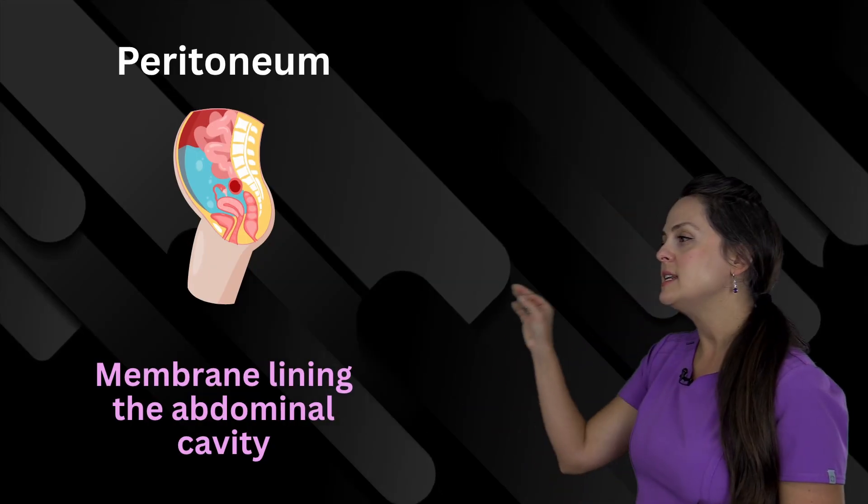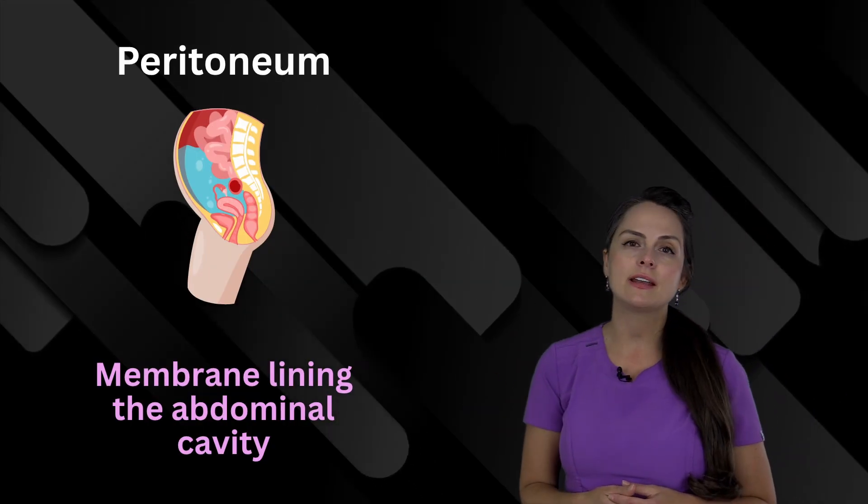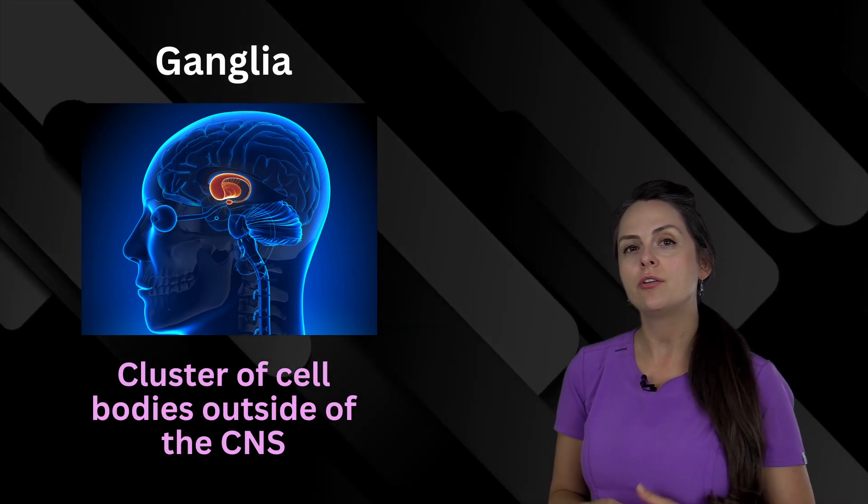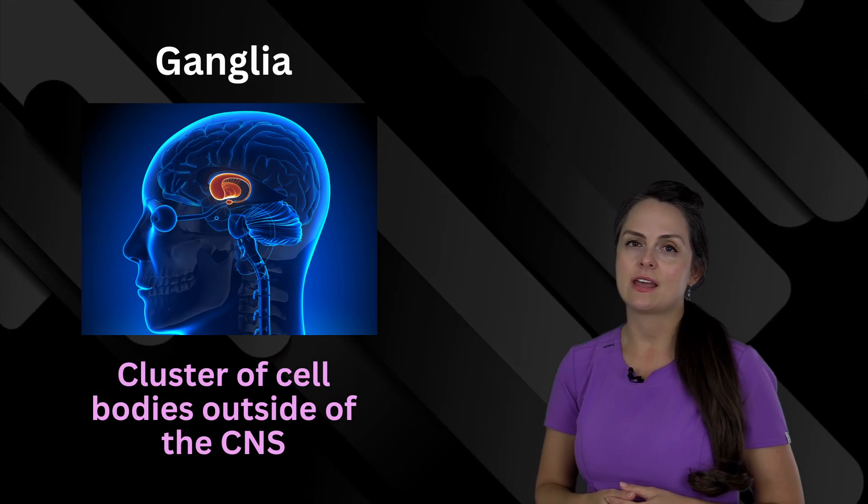This word is peritoneum, and it's the membrane lining the abdominal cavity. This term is ganglia, and this is just talking about a cluster of cell bodies outside the CNS.